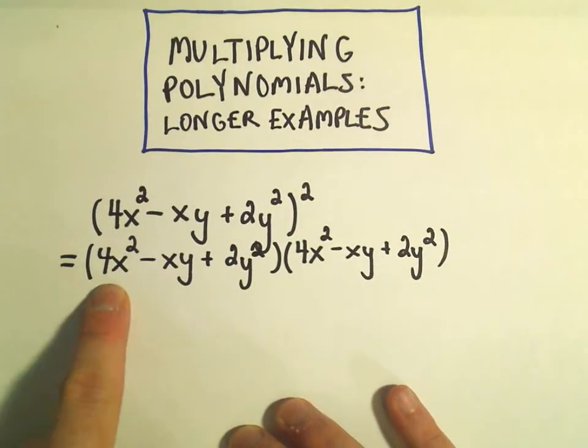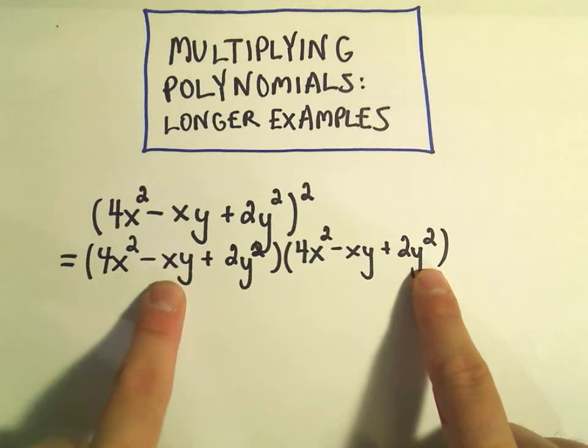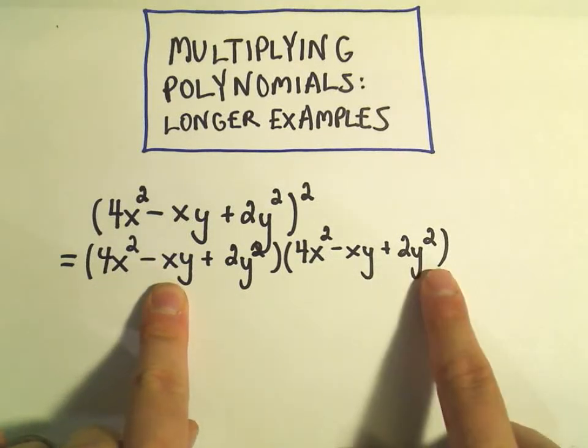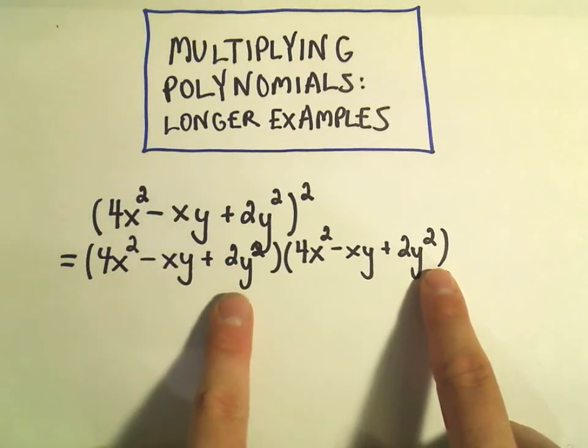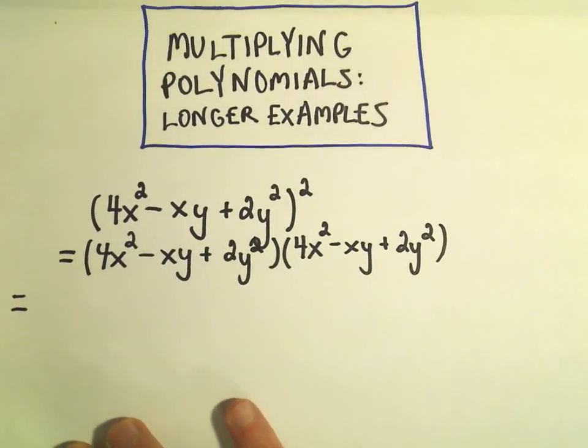And now what I'm going to do is just take the first term times everything in the second set of parentheses. I'll take the middle term times everything in the second set of parentheses, and likewise the third term times everything in the second set of parentheses. So I'm going to move over here to the left a little bit. Hopefully I can squeeze it all in here. It might be a long problem.